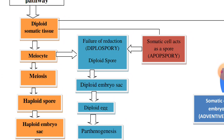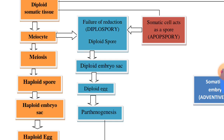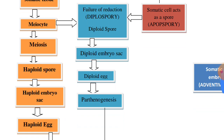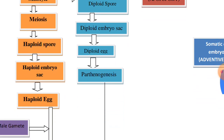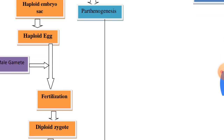In the apomyctic pathway, the megaspore mother cell does not divide further by meiotic division and there is formation of and functioning as a diploid spore. This diploid spore forms the diploid embryo sac in which the egg formed is diploid. This diploid egg, by the process of parthenogenesis, forms the diploid embryo.